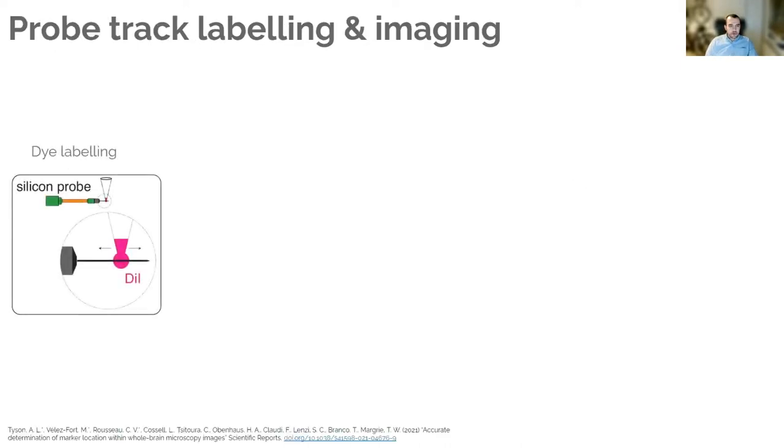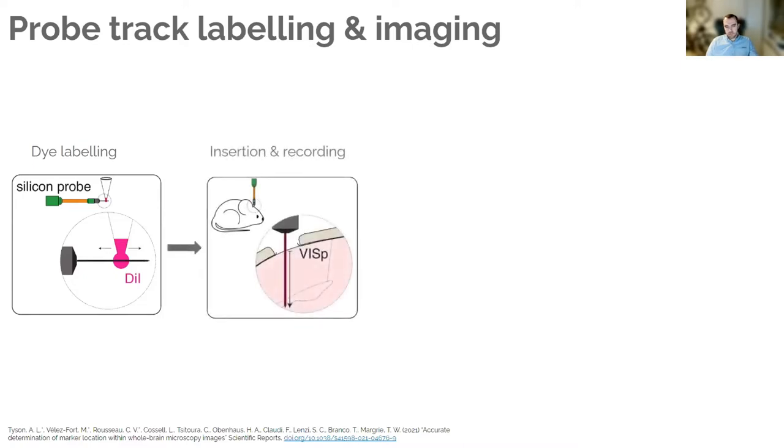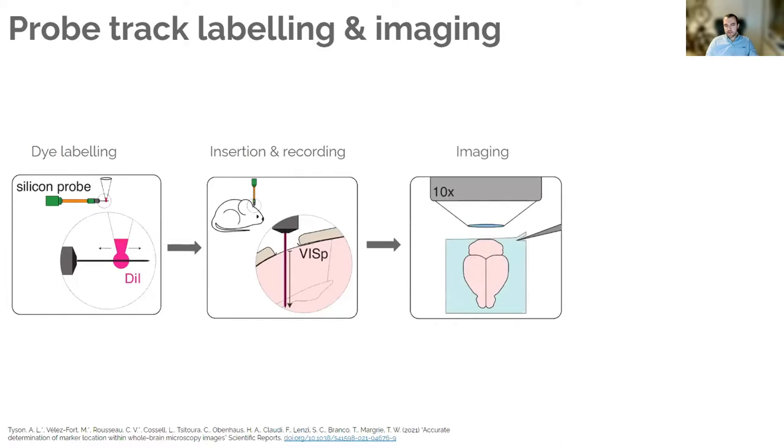The general principle is that you'll label your probe with some dye, usually DiI or one of its derivatives that might be fixable. You then carry out your experiment as normal with this dye on the probe. And then after the experiment's over, you remove the brain and you image it in some way.